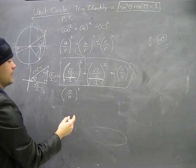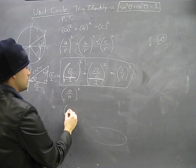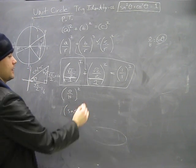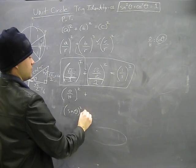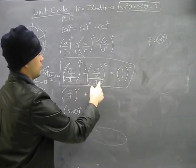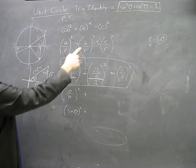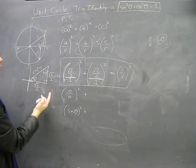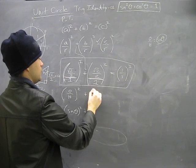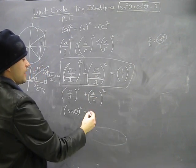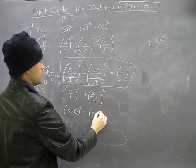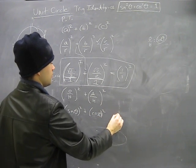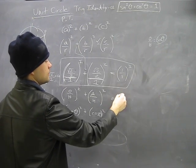Opposite over hypotenuse squared is sine squared theta. And B over the hypotenuse — adjacent over hypotenuse — is cosine theta squared. Of course, this side is just one.